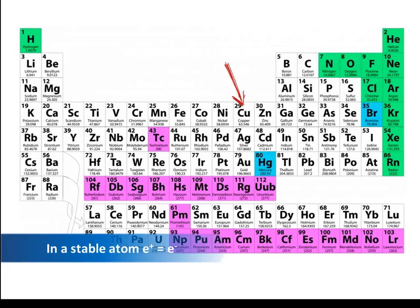Now remember, I should say, if it has 29 protons, then it's going to have 29 electrons. Because remember, in a stable atom, the number of protons equals the number of electrons. And of course, all the atoms on the periodic table are considered to be stable.